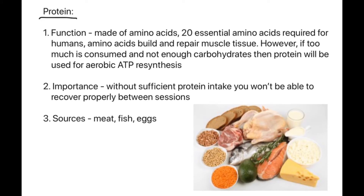Proteins — the function: proteins are made of amino acids and there are 20 essential amino acids required for humans. Amino acids repair and build muscle tissue. However, if you consume too much protein and not enough carbohydrates, you can actually use protein to aerobically respire ATP. The importance of proteins is that without sufficient protein you can't recover from your training session. If you do a session on Monday without enough protein, you don't recover properly for Tuesday, and your subsequent sessions suffer — you're not making progress, if anything you're losing gains. Sources include meat, fish and eggs.